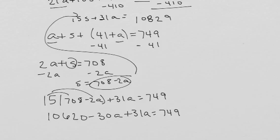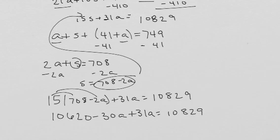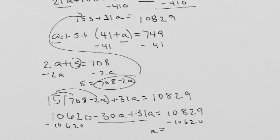Made a mistake here. That doesn't equal 749. I need to look at the correct equation. That equals 10,829. Alright, so if I subtract my 10,620 from each side and I combine my like terms, that tells me that A equals 209.